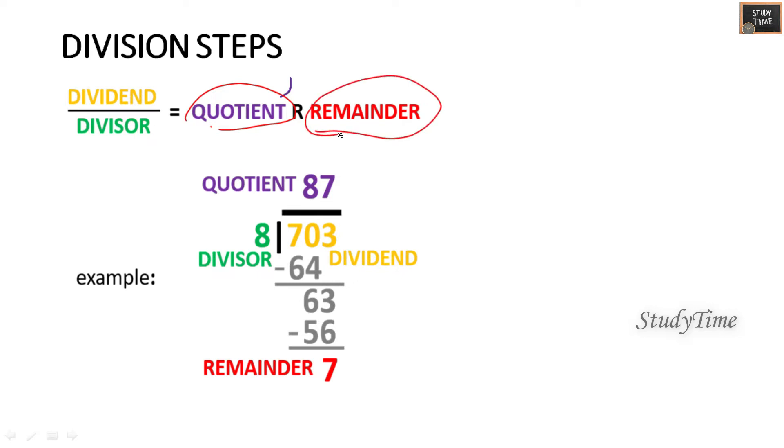See here 703 divided by 8. 8 eights are 64, and if you subtract you will be getting 6, and you have to drop this 3 here. 8 sevens are 56 and the remainder is 7.